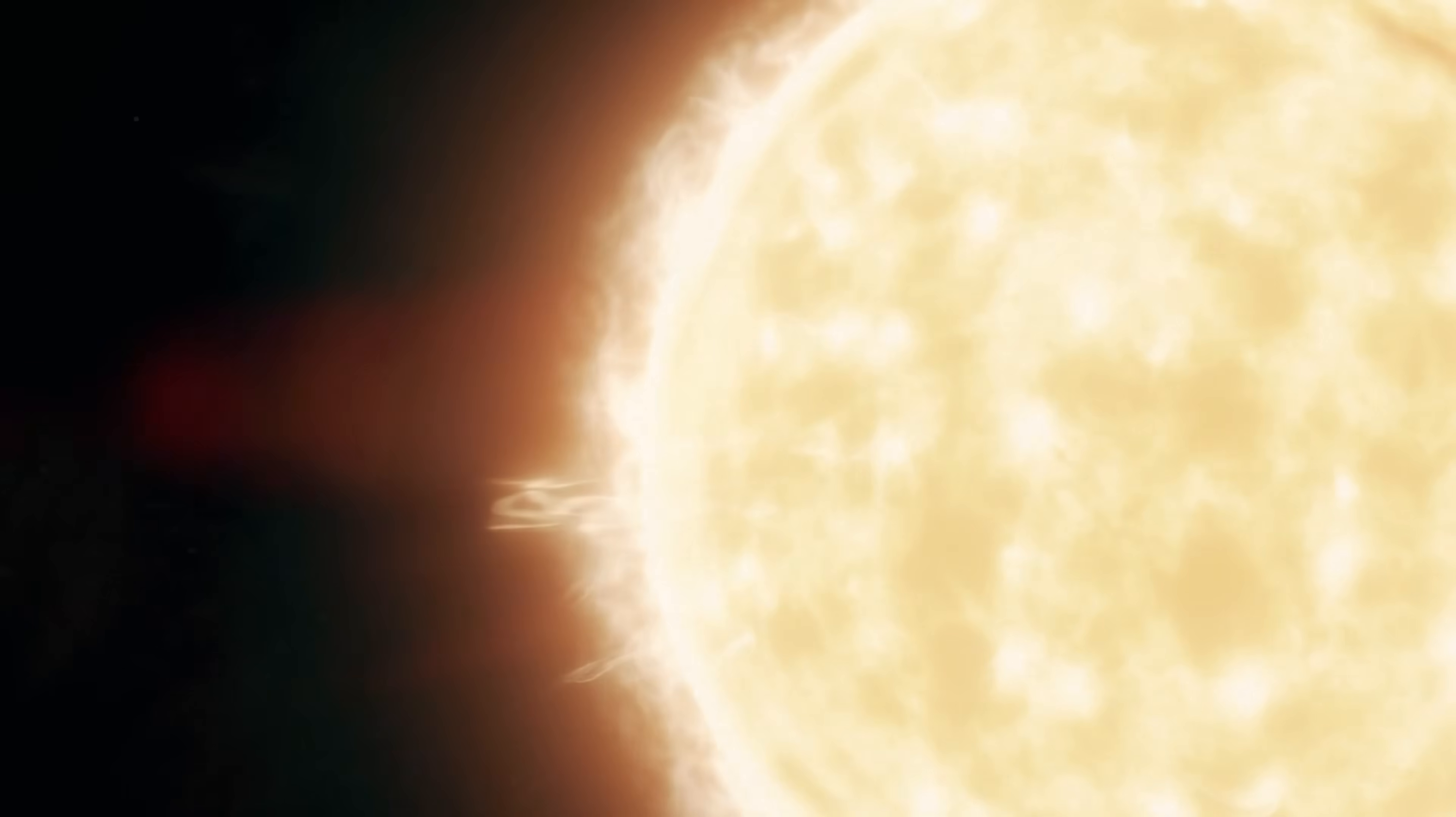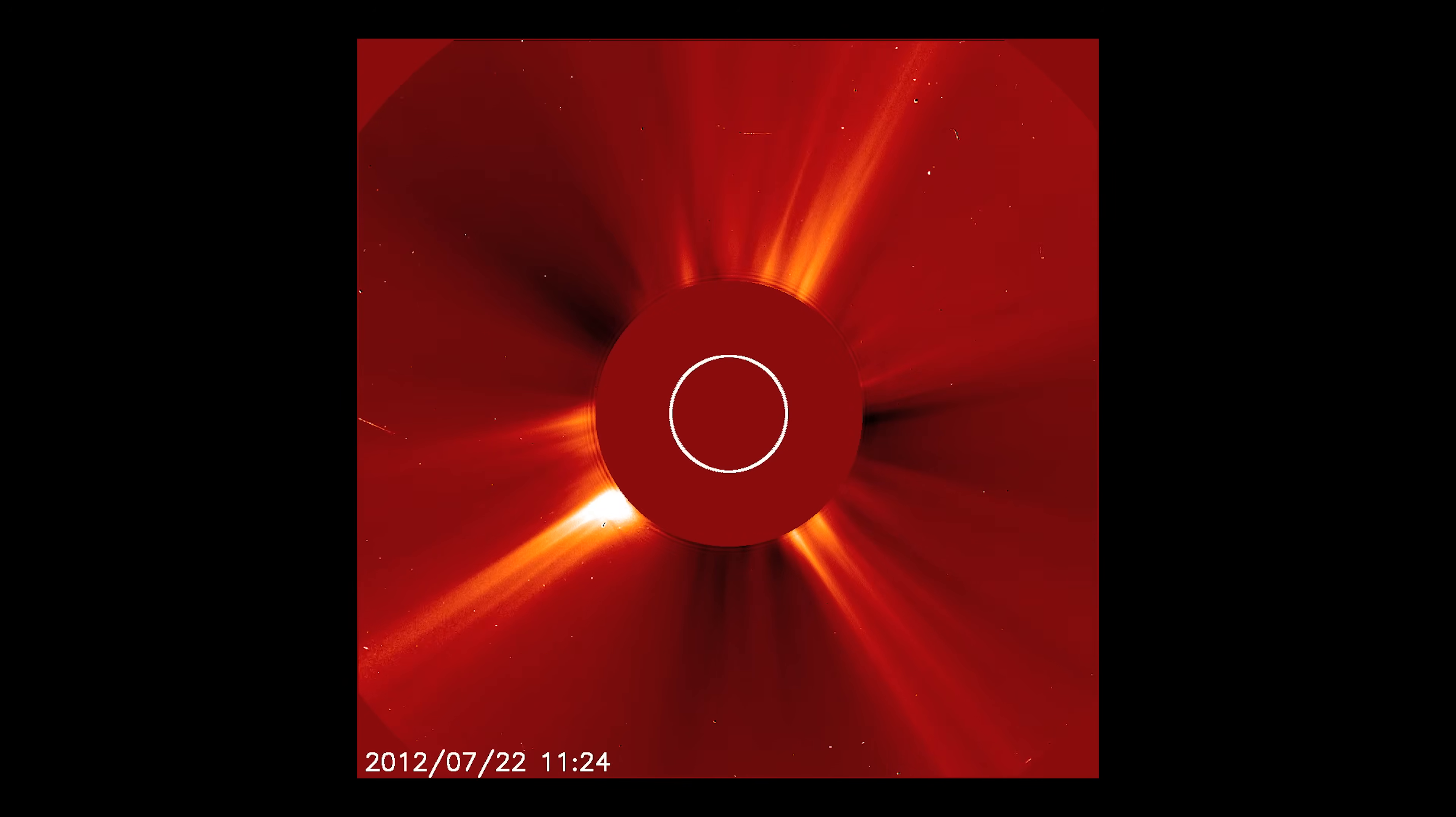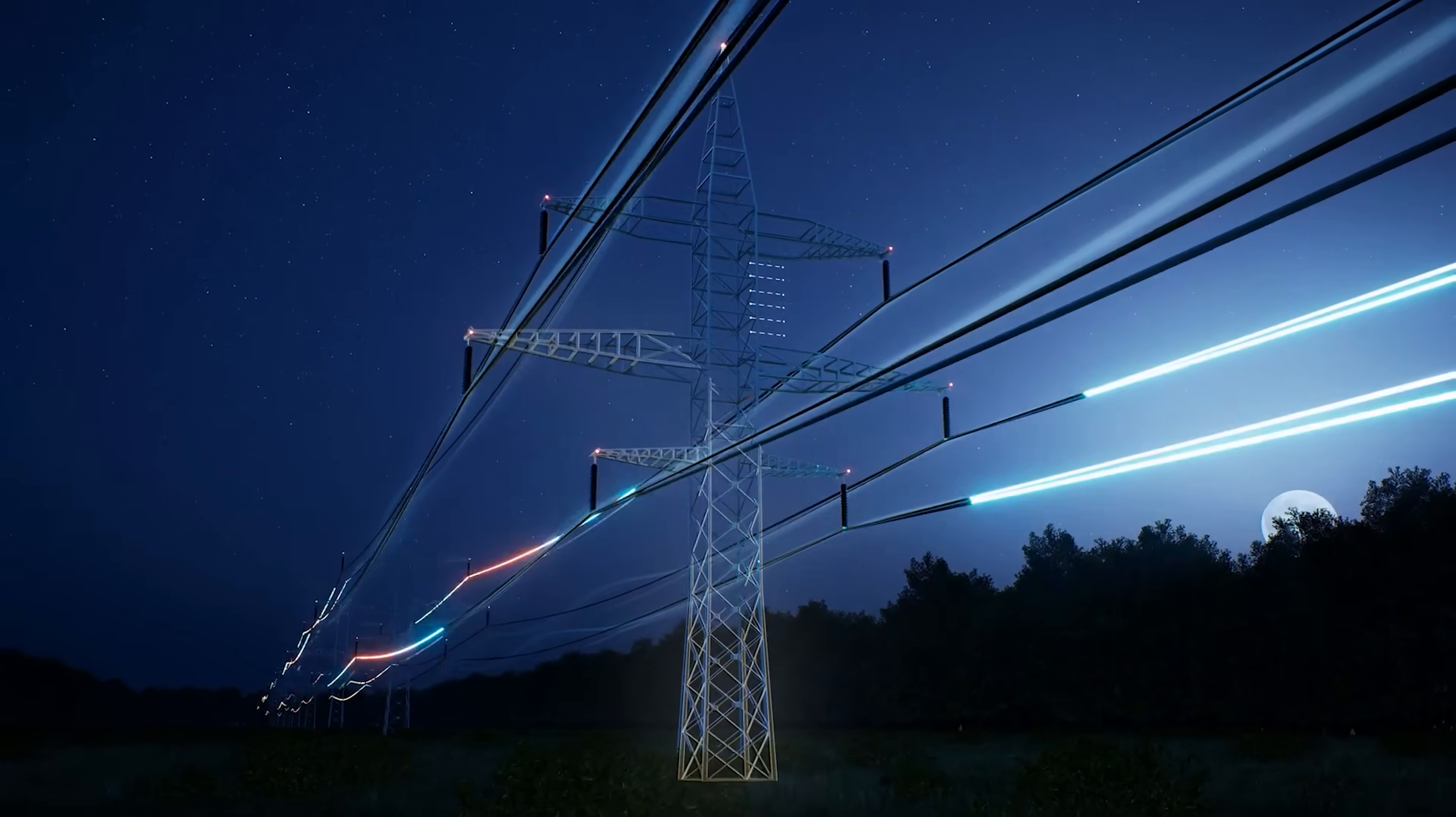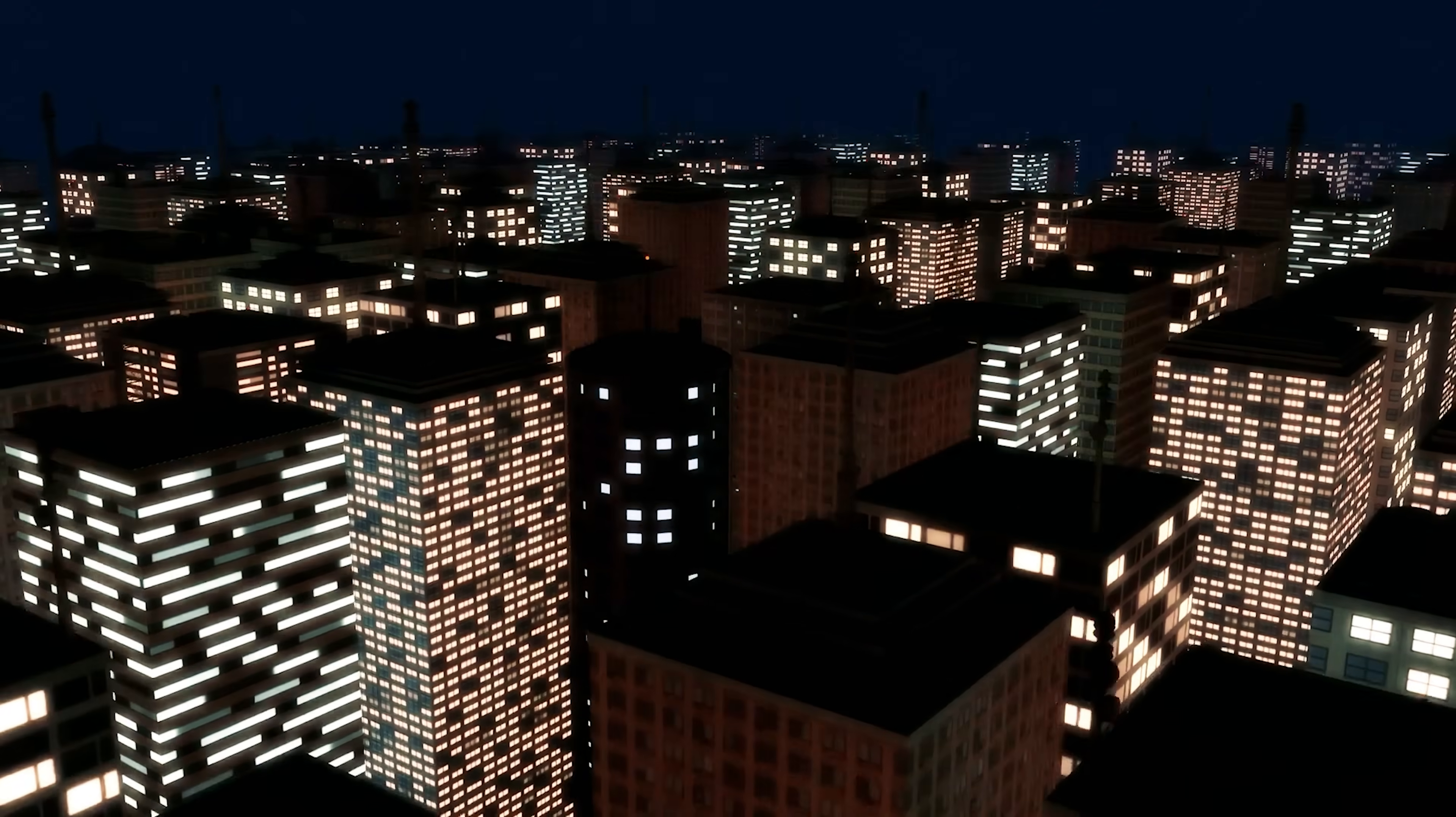We got our first taste of what an extreme geomagnetic storm could really do to our world in March of 1989, just a few months before the solar maximum of Sun Cycle 22. The world today, and even back then, is covered in millions of kilometers of electrical wire. A CME crashing into our planet is a cloud of billions of charged particles that can induce electrical currents throughout these wires, either causing them to shut down or overload, completely destroying the electrical transformers that power the entire grid.